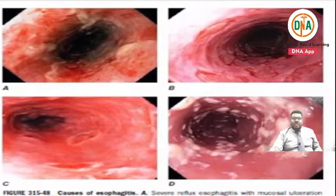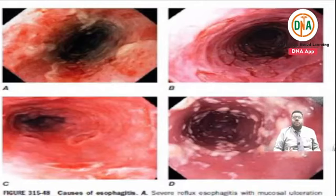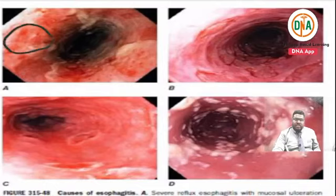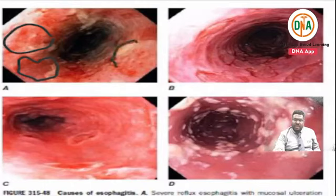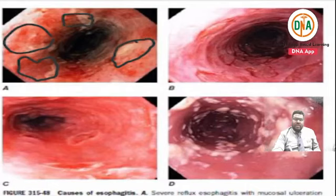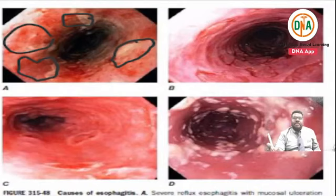Now let us discuss infections of the esophagus. In figure A, the endoscopy shows multiple punched-out ulcerations - multiple mucosal ulcerations with friable mucosa. The answer is gastroesophageal reflux causing reflux esophagitis.